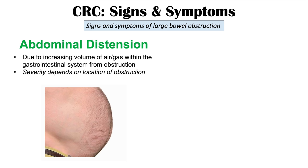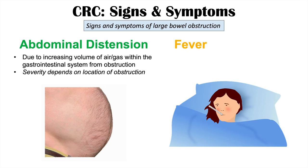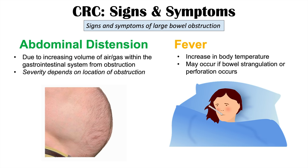Some patients may also experience a fever — an increase in body temperature. This may occur if there is bowel strangulation or if a perforation occurs. If there is a complete obstruction and air, gas, and stool contents build up within the gastrointestinal system, the bowels may begin to dilate and perforation may occur. This leads to colonic bacteria escaping into the surrounding peritoneum, causing an infection and fever.